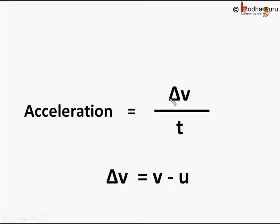That is, delta v divided by t. Remember, greek sign delta denotes change. So delta v means change in velocity. So delta v is equal to final velocity v minus initial velocity u.